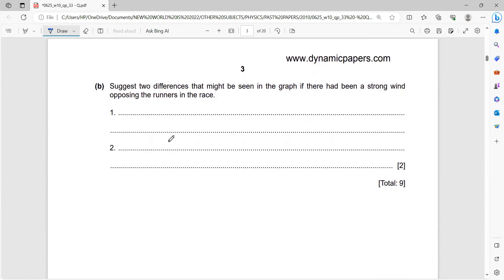Now, the last part of this question says, suggest two differences that might be seen in the graph if there had been a strong wind opposing the runners in the race. The first thing you need to say here is, if you have a strong wind, the total time will be longer. So you can say total time will be longer.